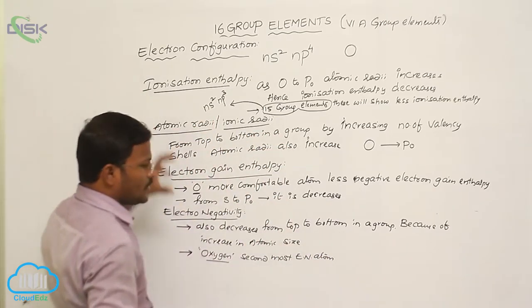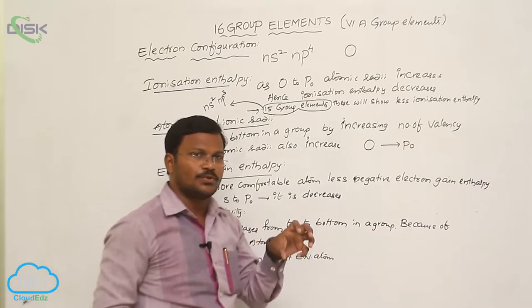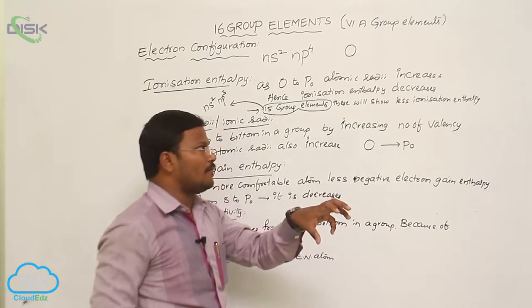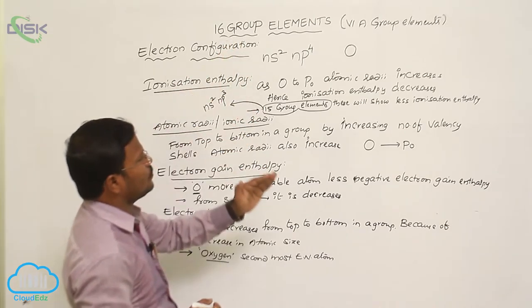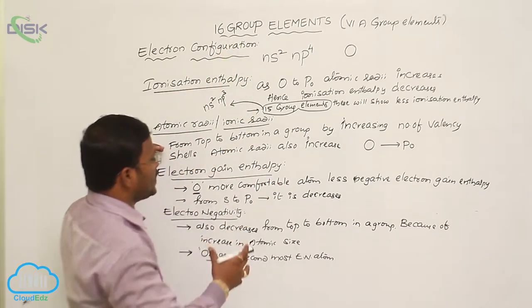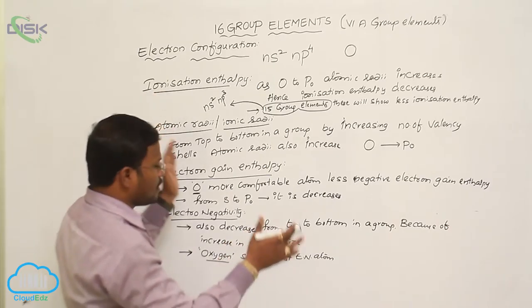Ionization enthalpy is the amount of energy utilized to eliminate electron from the valency orbit of an atom. From oxygen to phosphorus, as atomic radii increases, ionization enthalpies decrease.